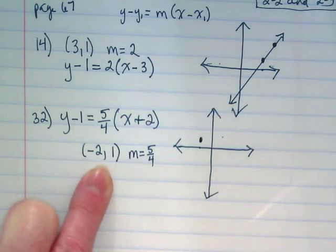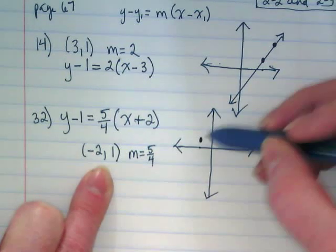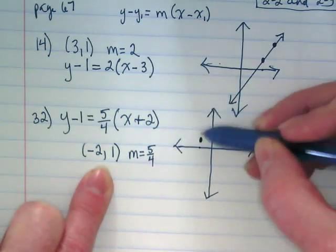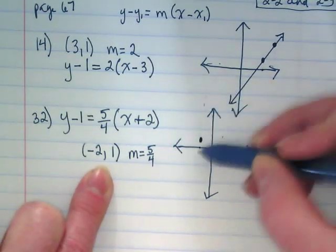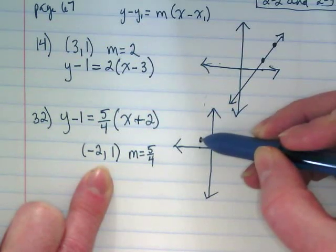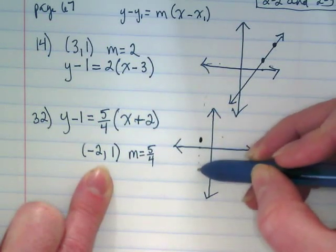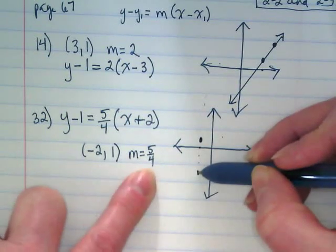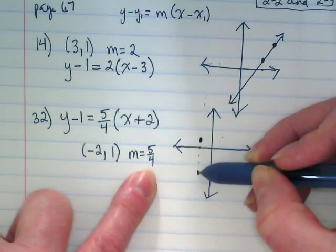And my slope is 5 over 4. I don't think I have room to rise up 5 here, do I? I'm going to drop down 5 then. If this is 1, 2, 3, 4, 5, it's going to be about there. And then I'm going to run 4.